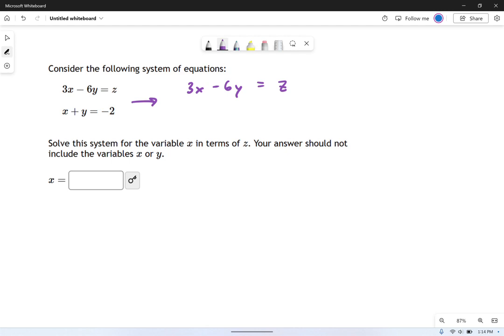Now I'm going to take this second equation right here and multiply the whole thing by 6. So I get 6x plus 6y equals, 6 times negative 2, that's negative 12.